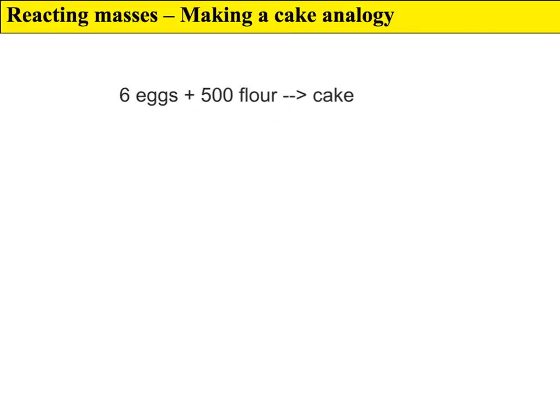So how much ingredients do I need if I want to make two cakes? Well, obviously I need double it. I need 12 eggs, 1000 flour, which gives me two cakes. Molar ratios, when you're doing equations, it's exactly the same as this.